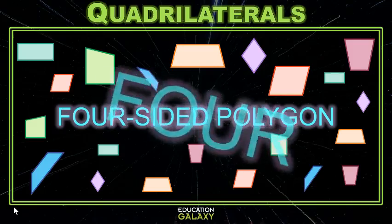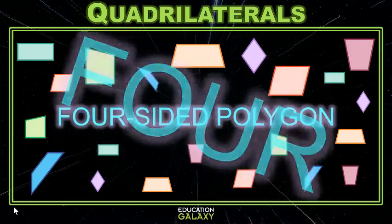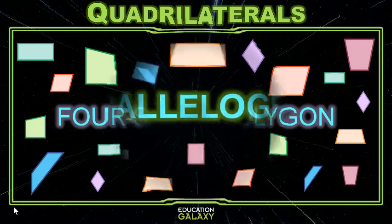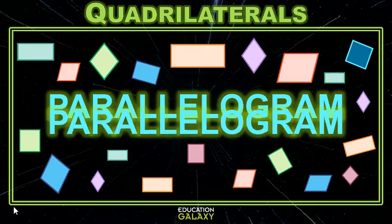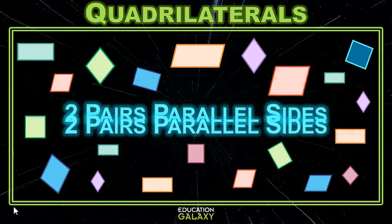How many sides? Four. A quadrilateral is a four-sided polygon. And some quadrilaterals have other special names, like parallelogram. What makes a parallelogram so special? It has something to do with its sides — it has two pairs of parallel sides.